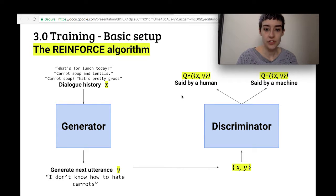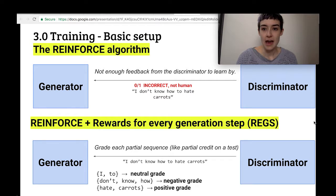So the first improvement that they make, with the plain REINFORCE algorithm, the generator will say something like 'I don't know how to hate carrots.' That's a really weird thing to say, but the discriminator is just going to say no, that's wrong, that's a machine. And that's not enough information for the generator to actually learn from.